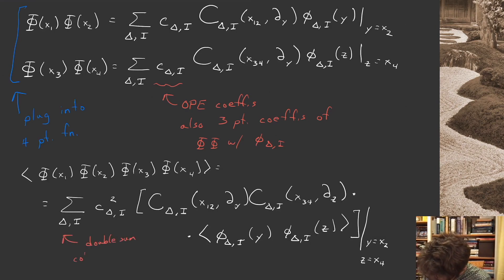The double sum collapses to a single sum because these two-point functions vanish unless the dimensions and representations of the Lorentz group agree. So that's interesting. We have to pause and appreciate this expression. Everything here is fixed by conformal invariance, except for these coefficients here. So if we were to know these three-point functions, the coefficients in these three-point functions, we would be able to reconstruct the four-point functions.